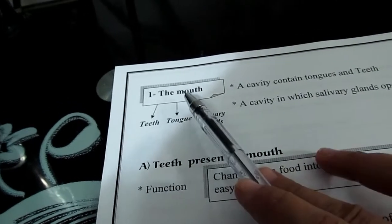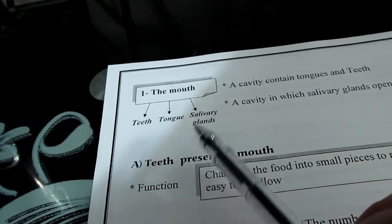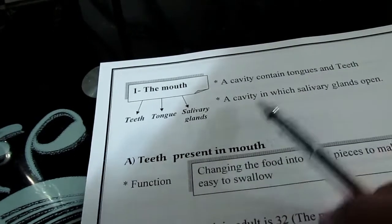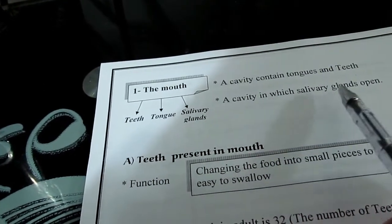Okay, definition of the mouth: a cavity that contains tongue and teeth, a cavity in which salivary glands open.